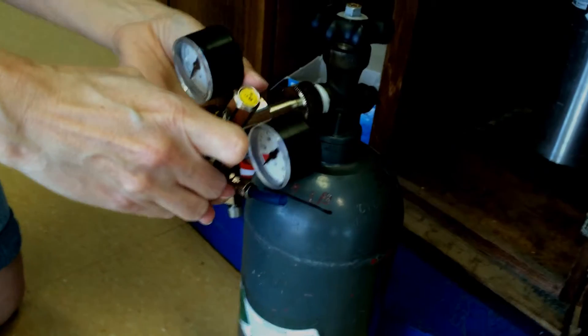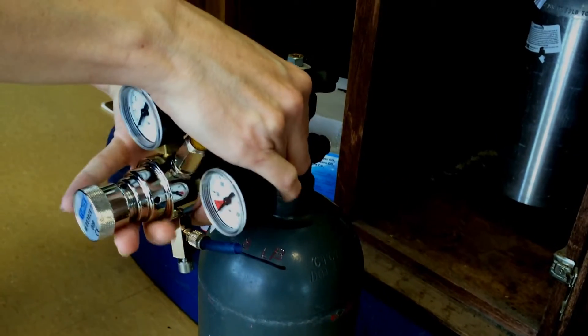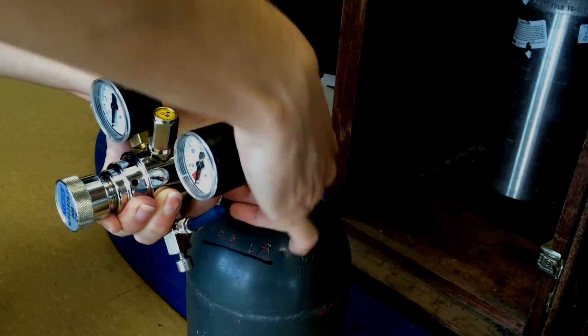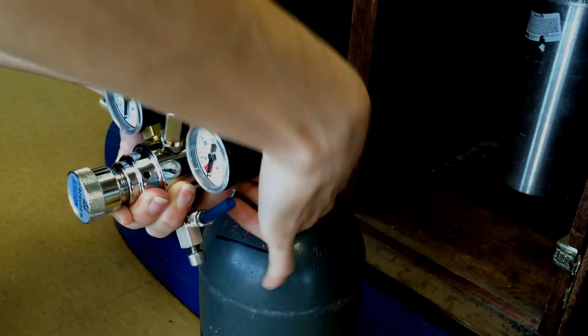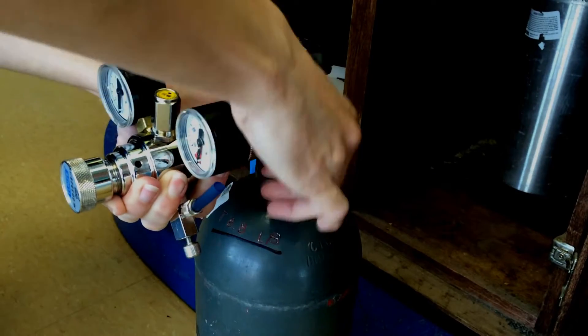Then you're going to take your regulator and attach it to your tape. Line it up. Take your time doing this. It takes a second. You want to make sure you've got steady, firm pressure and that this goes on nice and easily and tightly.